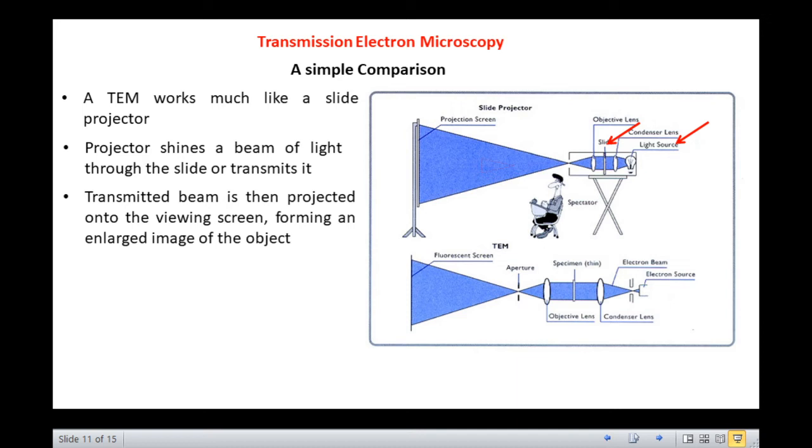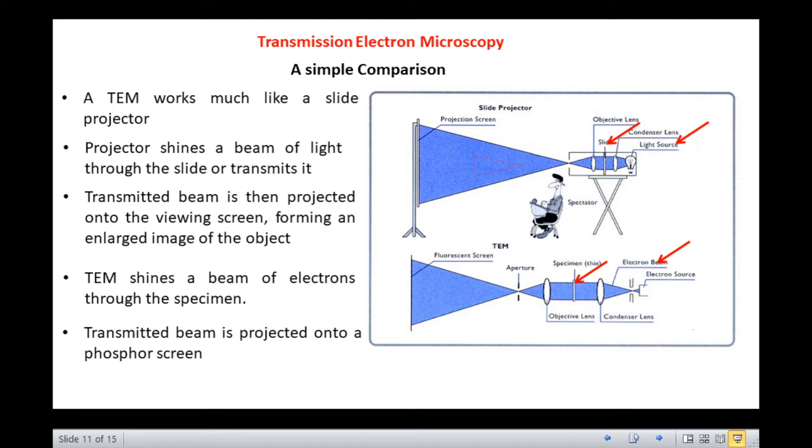TEMs work the same way except that they shine a beam of electrons through the specimen. The transmitted beam is then projected onto a phosphor screen or it is documented on photographic material.